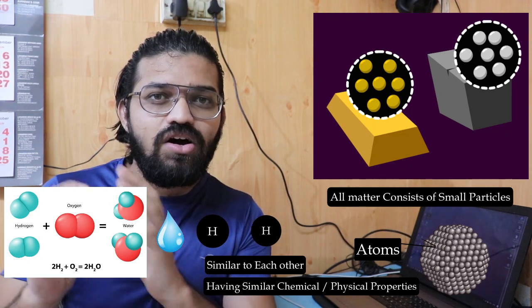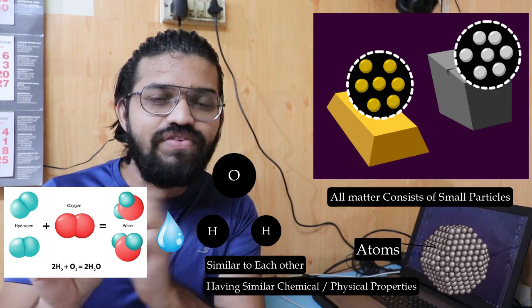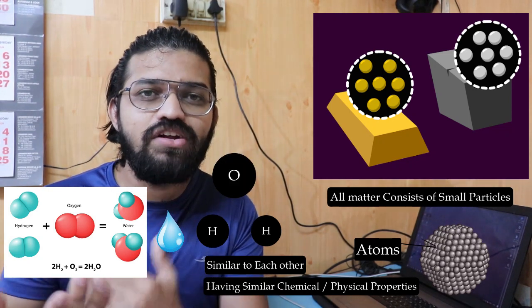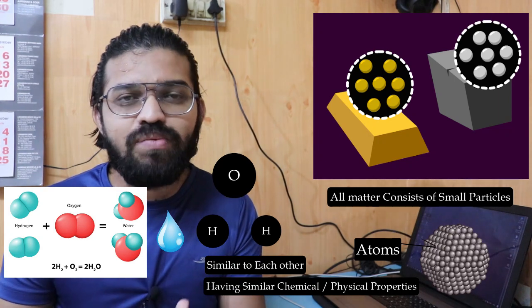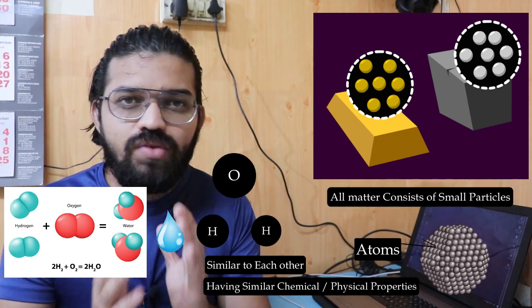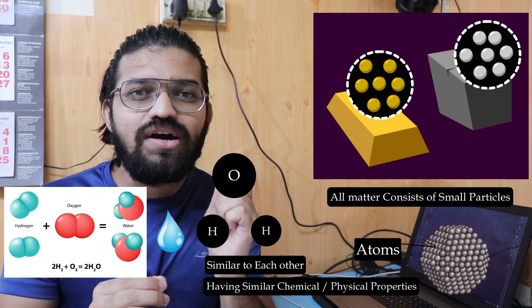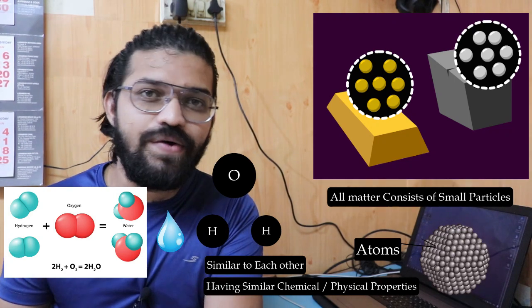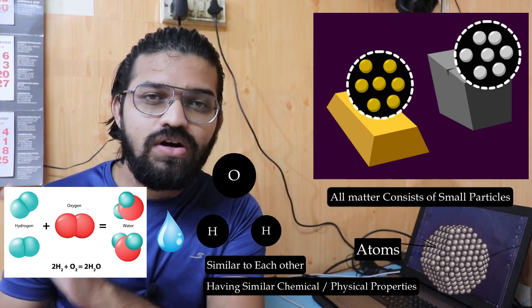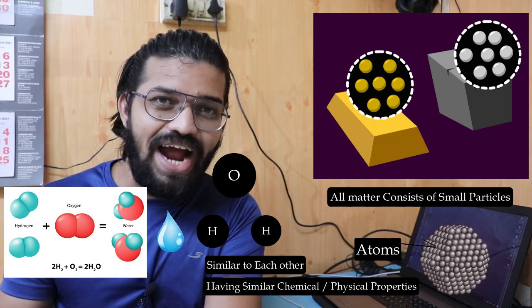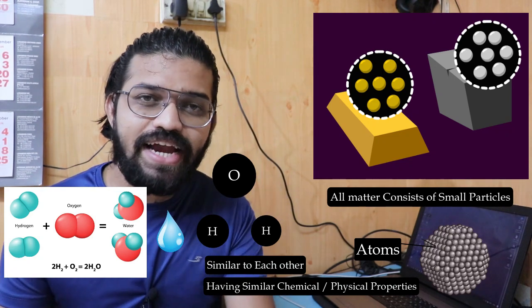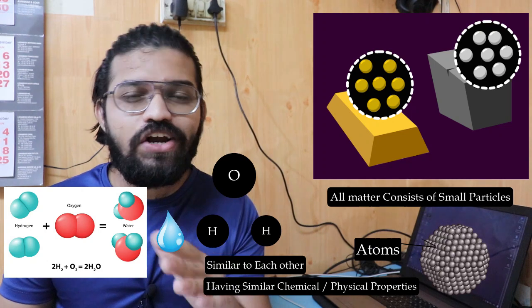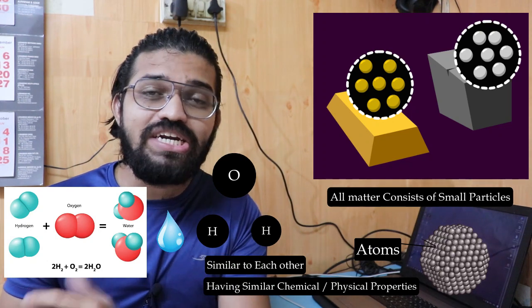However, comparing oxygen and hydrogen atoms, these two atoms have different shapes and different atomic masses. The law of conservation of mass is satisfied here. Based on this, Dalton postulated the second point: atoms cannot be created or destroyed.